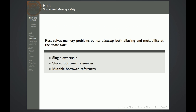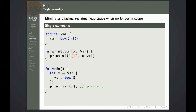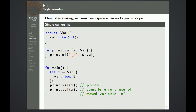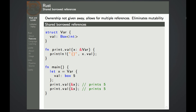Rust solves this problem by not allowing both aliasing and mutability at the same time. Rust does this by introducing either single ownership, shared borrowed references, or mutable borrowed references. This is an example of single ownership where the variable is moved between functions. When we call printval, x will be moved into this function and will no longer be available in main. Because of this, it is not possible to print x two times, because x is moved away in the first function call. If you want to do this, we have to use shared borrowed references — we now have aliasing, but since x is not a mutable variable, this is not a problem.